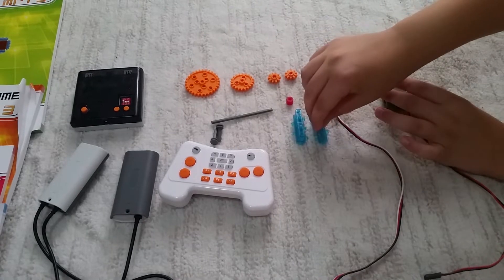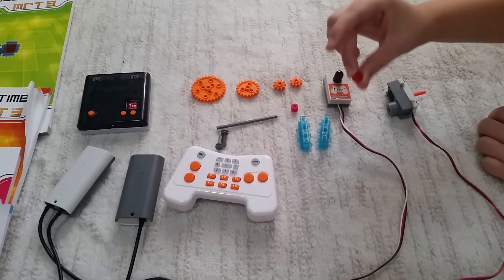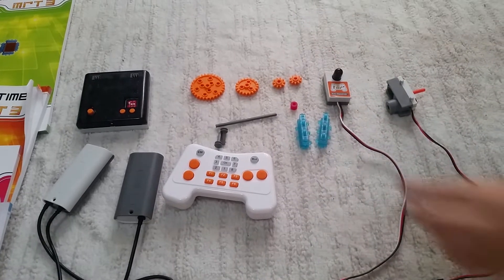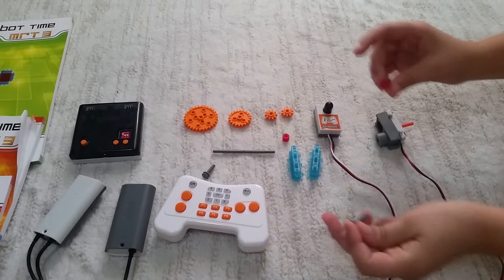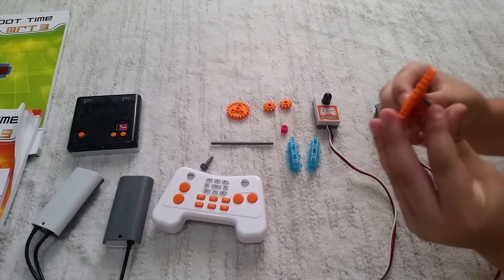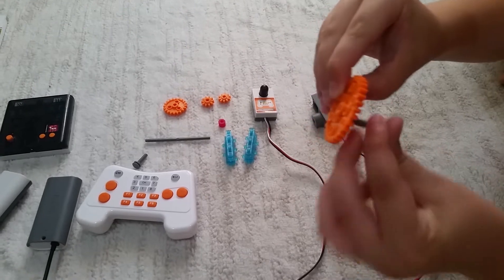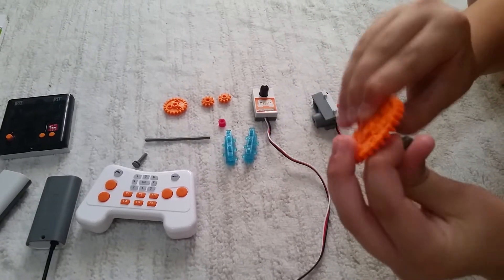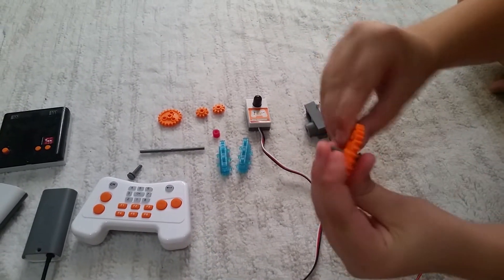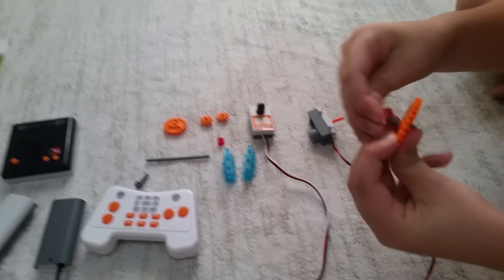Next on the list we have these - these are called stoppers. So when you put in a pin, for example when you put in a gear on a pin, it can easily go out, so you need to put a stopper right here so the gear doesn't get out.